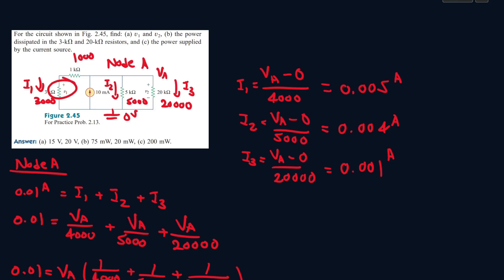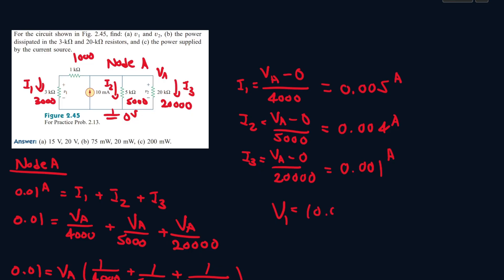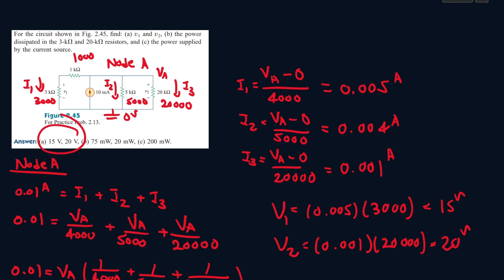Now we find the voltage across the resistors. Voltage equals IR, so v1 equals i1 times the 3000 ohm resistor: 0.005 times 3000 gives 15 volts. For v2, it's 0.001 times 20000 ohms, which gives 20 volts. As you can see, this matches what we have in the circuit.